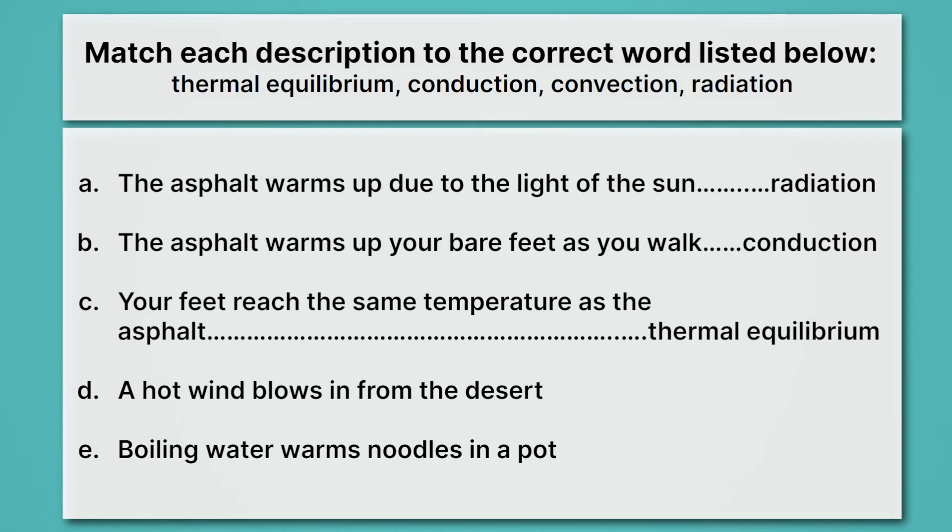D is a hot wind blows in from the desert. Okay, well, that's going to be transferring of thermal energy by convection, where there's a substance moving from a hot area to a cold area. Alright, E is boiling water warms noodles in a pot. Hmm, what is this one? Well, the water is actually hot, directly touching the cold thing, which is the noodles. So this is maybe the trickiest one, but that's conduction, because we're talking about the water warming the noodles.